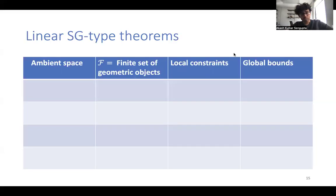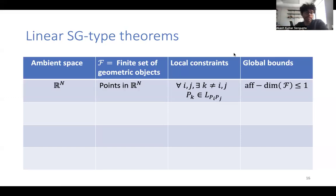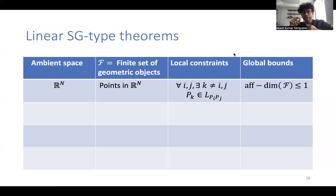Let's talk about classical and recent Sylvester-Galai type theorems. In all of these there is an ambient space, a finite set of geometric objects, some local constraints, and a global bound. If our ambient space is Rn, we take a bunch of points, and the local constraint is that for any pair of points pi and pj there is a third point pk on the line joining pi and pj. The theorem tells us the affine dimension is at most one — that's the global dimension bound.